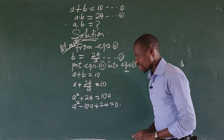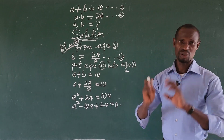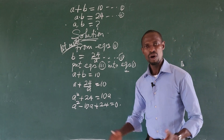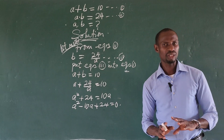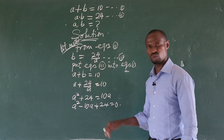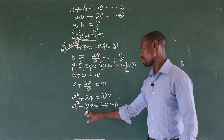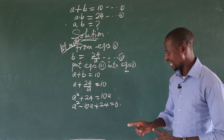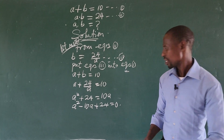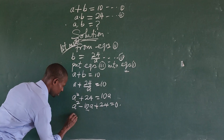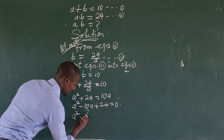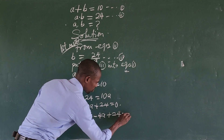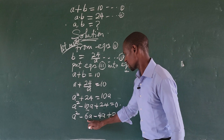This is a quadratic equation, so we solve it using the factorization method. We look for two factors of 24 that multiply to give positive 24 and add to give minus 10. That gives us minus 6 and minus 4. So we rewrite the middle term: a squared minus 6a minus 4a plus 24 equals zero.